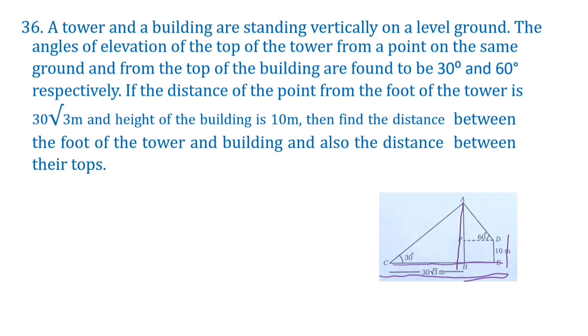The angles of elevation of the top of the tower from a point on the same ground, that is C, and the top of the building, that is point D, are found to be 30 degrees and 60 degrees respectively. If the distance of the point from the foot of the tower is 30 root 3, this one is 30 root 3, CB is 30 root 3.